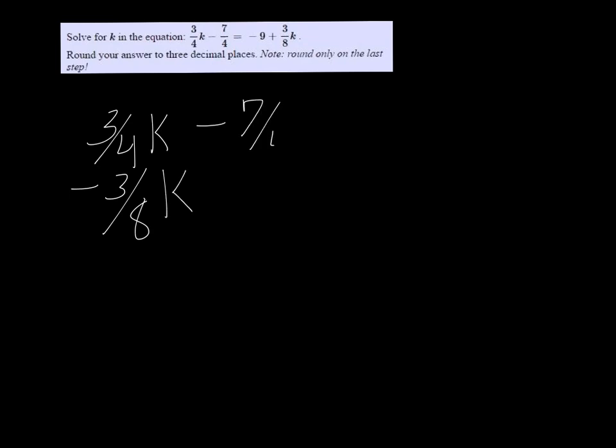Alright, minus 7/4 equals -9 plus 3/8k, and then we're taking away 3/8k.